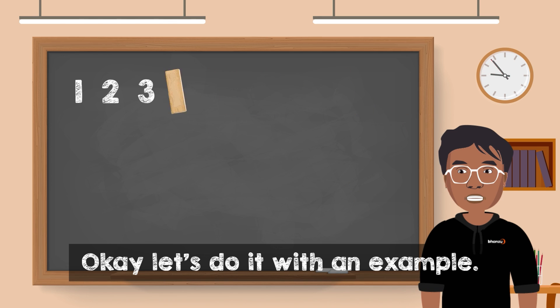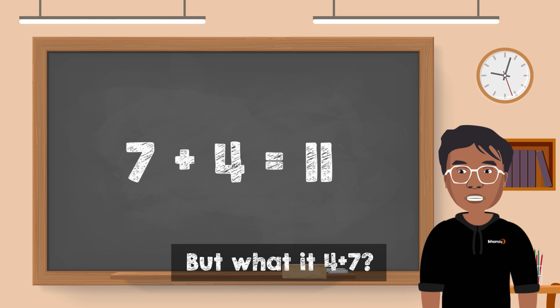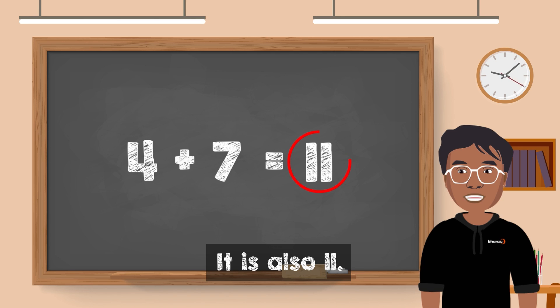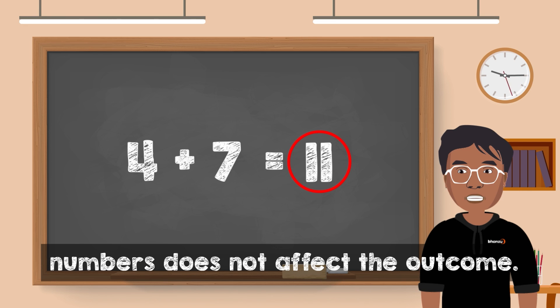Let's do it with an example. 7 plus 4 is equal to 11. But what is 4 plus 7? It is also 11. Hence, the order in which you add the numbers does not affect the outcome.